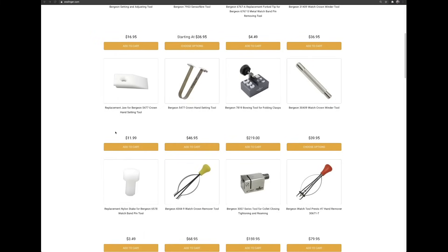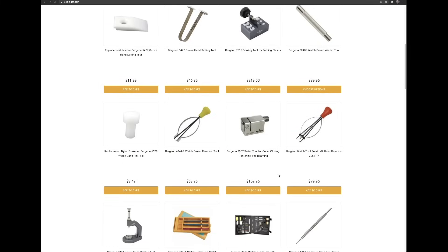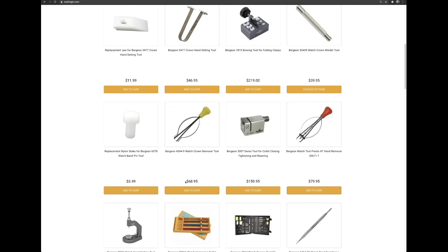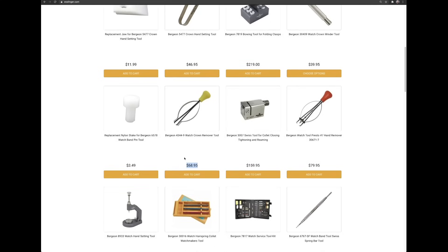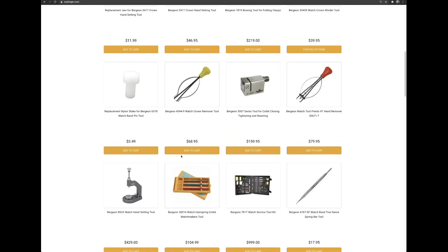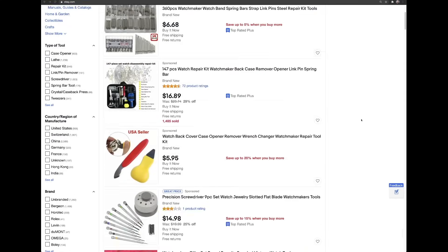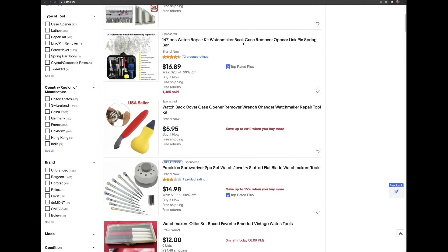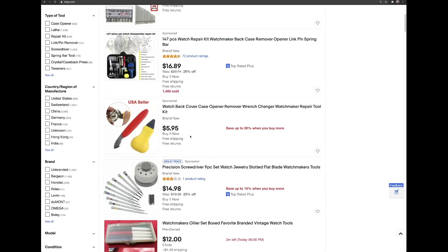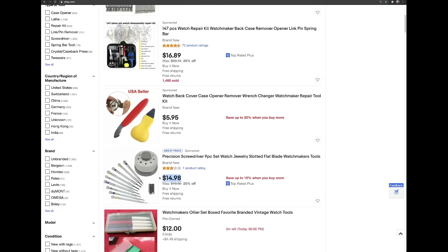A quick note, when shopping for watchmaking tools, you'll often find yourself facing down two broad options. One option is the high quality stuff from Switzerland, from companies like Bergeon and Horatec, and the other are generic low quality tools, mostly from China, that cost as little as one-tenth the price, so it can be tempting to go that direction as a beginner.